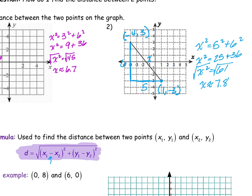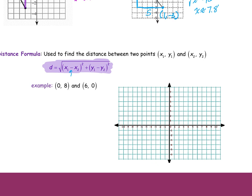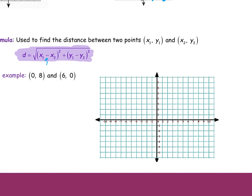I'm here to try and make it easier. Because on a graph it's easier. So if I have the point (0, 8) — where's my 0? 0 side to side, and I go up 8. So my point is all the way up here. And where's (6, 0)? My first number is 6, so I go 6 across and 0 up. There's my second point. They want to know how far it is between those two points — that's my distance.